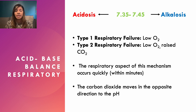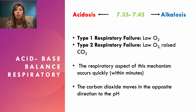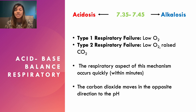There are two types of respiratory failure. Type 1 is where the patient has desaturated and oxygen only is low. Type 2 is where you have low oxygenation and the carbon dioxide has also increased because you're retaining CO2. The key thing to remember about respiratory mechanisms is that carbon dioxide will move in the opposite direction to the pH: acidosis means low pH and high CO2; alkalosis means high pH and low pCO2.